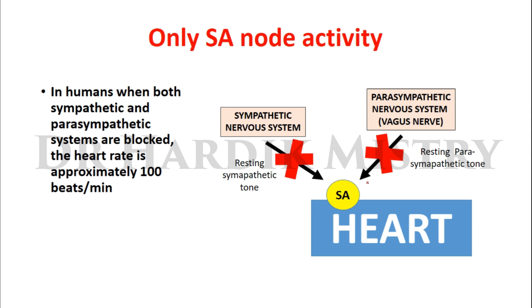When considering only the SA node activity: in humans, when both the sympathetic and parasympathetic systems are blocked, the heart rate is approximately 100 beats per minute.